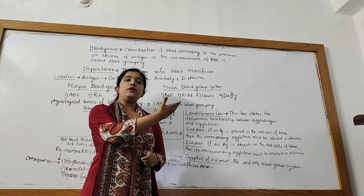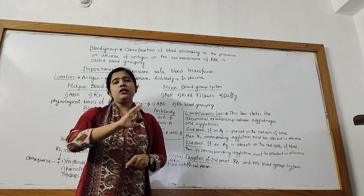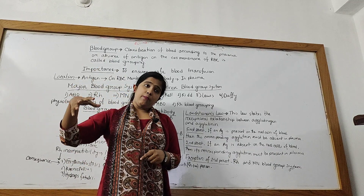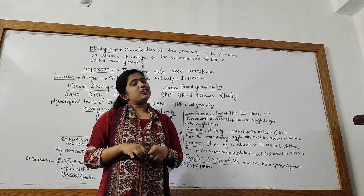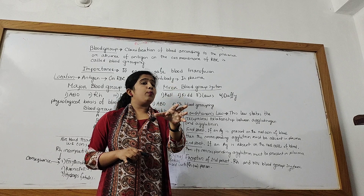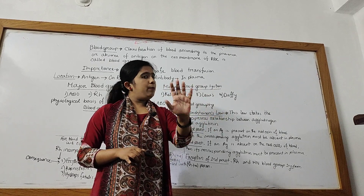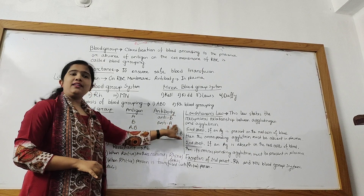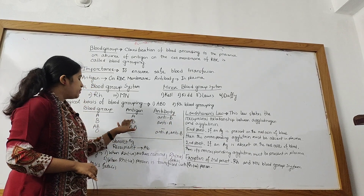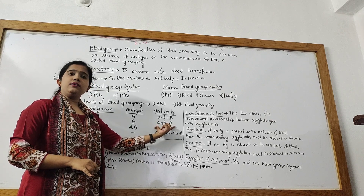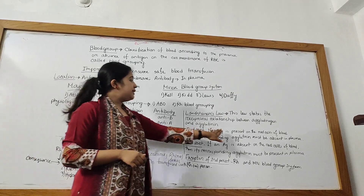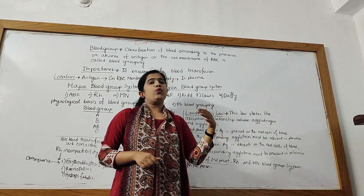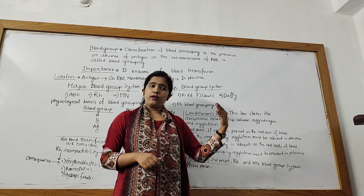Second part: if the agglutinogen is absent on the RBC membrane, then its corresponding antibody or agglutinin must be present in the plasma. For example, in blood group A, B antigen is absent, so anti-B must be present. And if B antigen is present, then anti-B must be absent. Conversely, if B antigen is absent, then the corresponding agglutinin anti-B must be present.